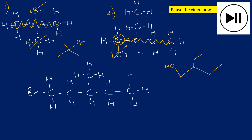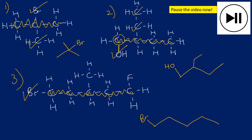For number three: five carbons long — one, two, three, four, five. On the first carbon there's a bromine. On the third carbon there's a methyl group. On the last carbon there's a fluorine. That covers all three examples with functional groups.